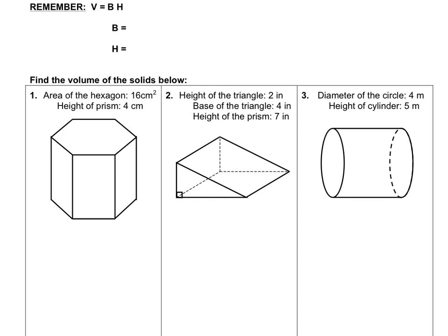We can generalize Cavalieri's teachings in the formula V equals BH. This stands for volume equals base times height. Notice how this is a capital B. When we talk about capital B, we're actually talking about the area of the base.